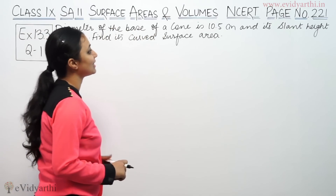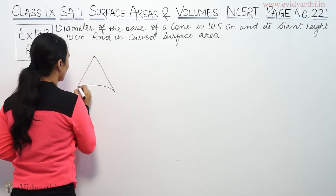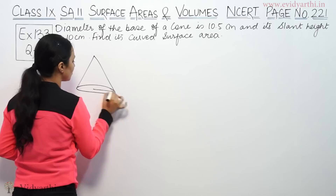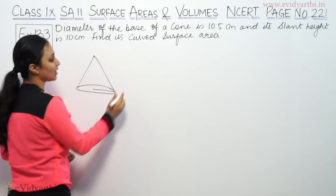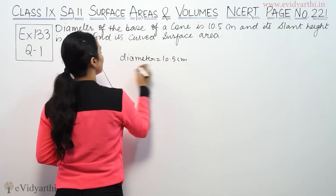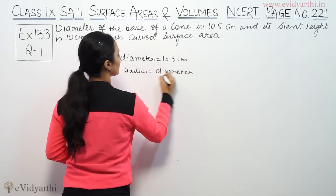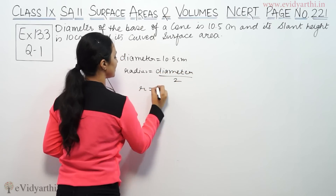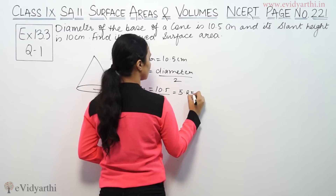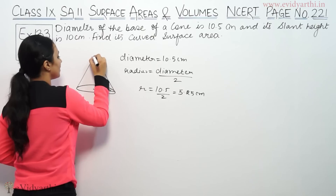The question says the diameter of the base of a cone is 10.5 cm. We will find the radius, which will be diameter divided by 2. So radius is 10.5 divided by 2, which gives us radius equal to 5.25 cm.